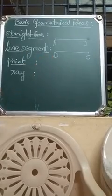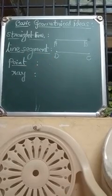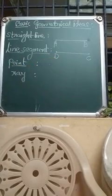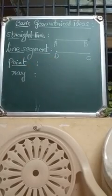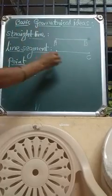Then, point. Take any sharp object — suppose a chalk or pen or pencil — just put a dot. It is also said to be a point.